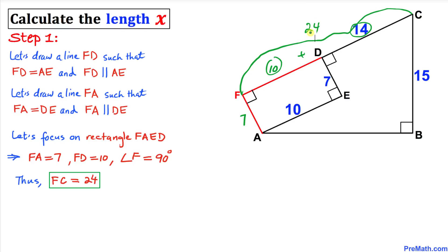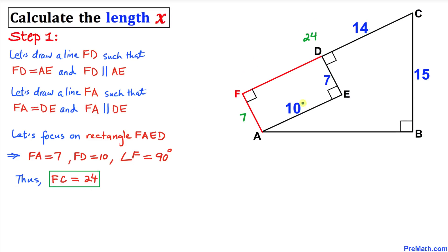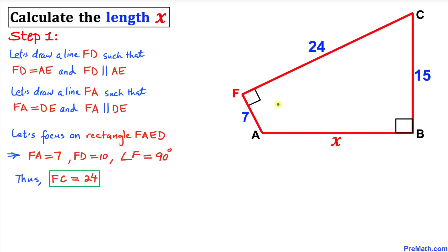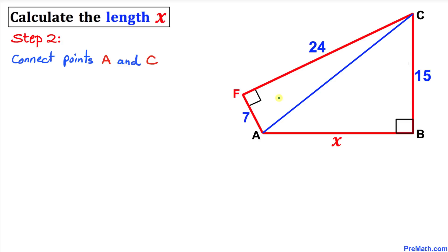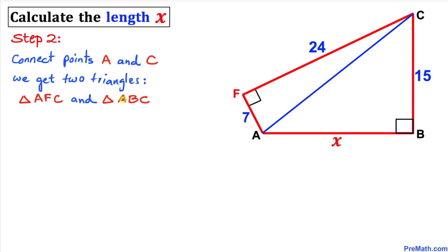As you can see, line segments AE and DE are no longer needed, and here's our new figure. In the next step, let's go ahead and connect points A and C. We are going to connect these points A and C carefully. Here's our much nicer looking diagram, and as a result we get two triangles.